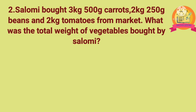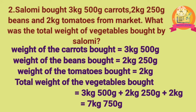Second problem: Salome bought 3 kg 500 g carrots, 2 kg 250 g beans, and 2 kg tomatoes from the market. What was the total weight of vegetables bought by Salome? Solution: weight of carrots is 3 kg 500 g, beans is 2 kg 250 g, and tomatoes is 2 kg. Total weight is obtained by adding all three: 3 kg 500 g plus 2 kg 250 g plus 2 kg, which equals 7 kg 750 g.